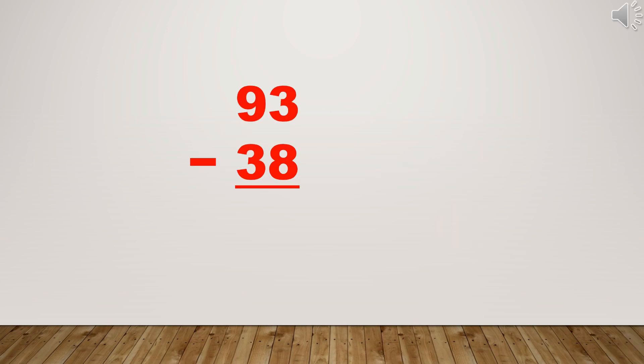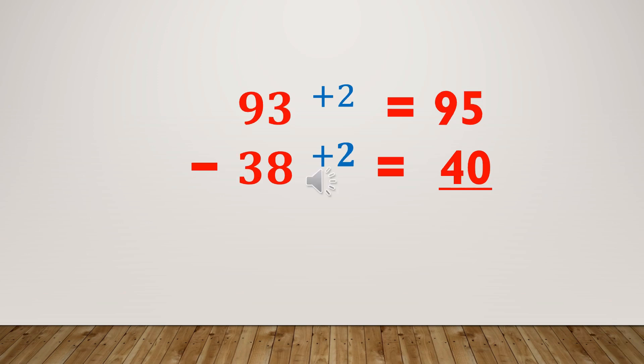Let's make our subtraction divisible by 10 by adding 2. Add 2 to 38 to make it 40. Add also 2 to 93, it will make 95. So it will now be easy for us to subtract. 95 minus 40 is equal to 55.